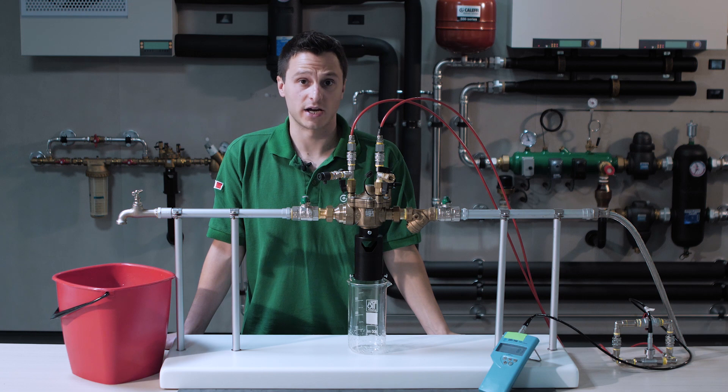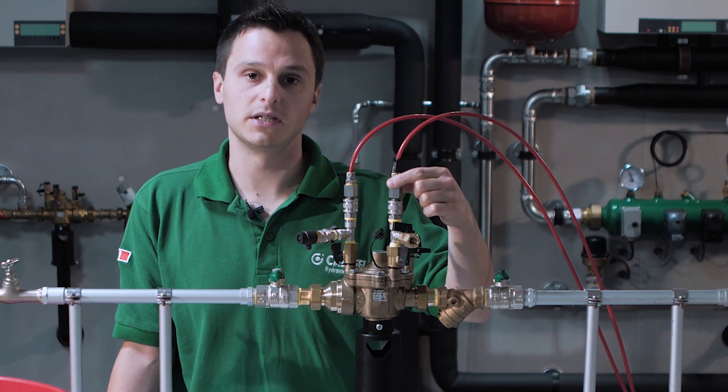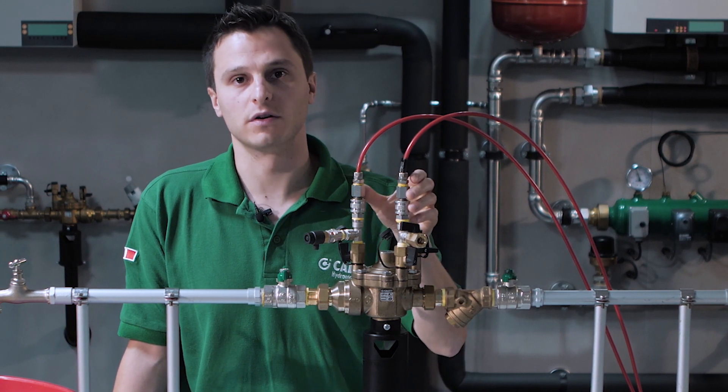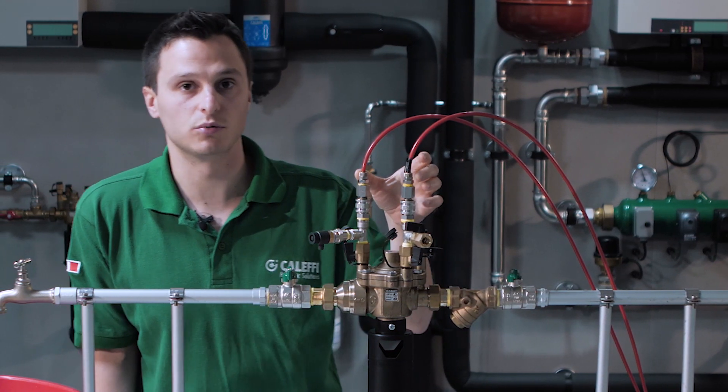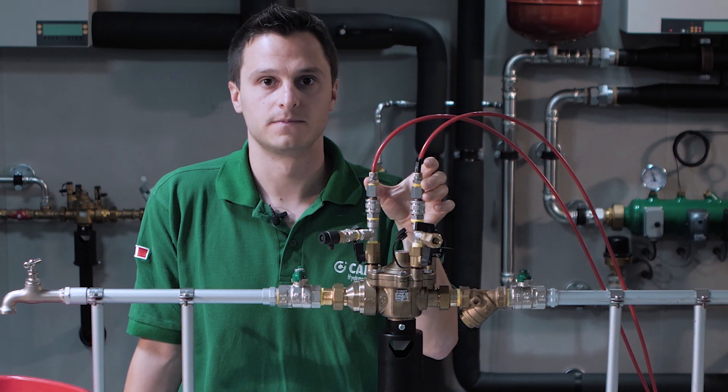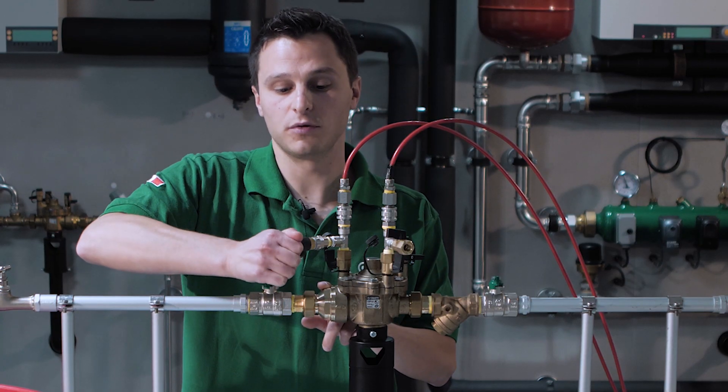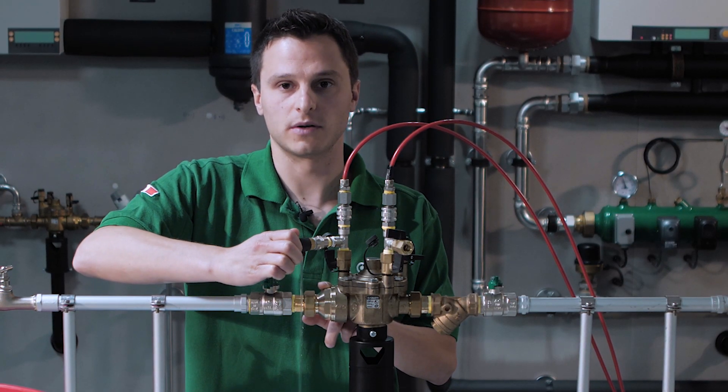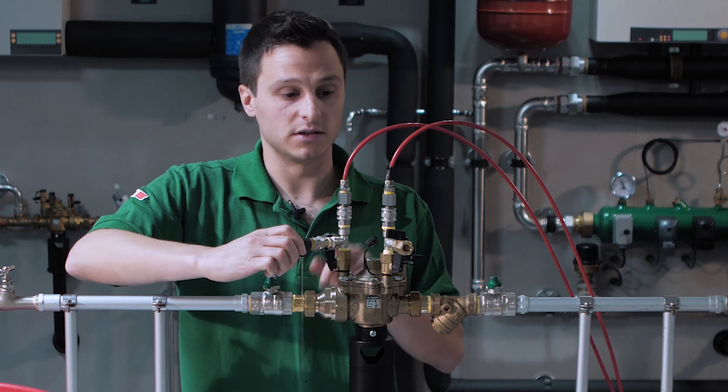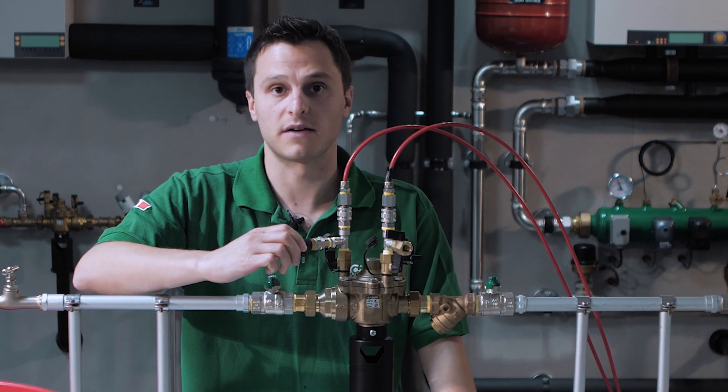For the last check, connect the differential manometer to the intermediate chamber and downstream area. Verify that the differential pressure between these two points is at least 70 millibar. If the downstream check valve operates correctly, the differential pressure must remain at least 70 millibar even when decreasing the downstream pressure.